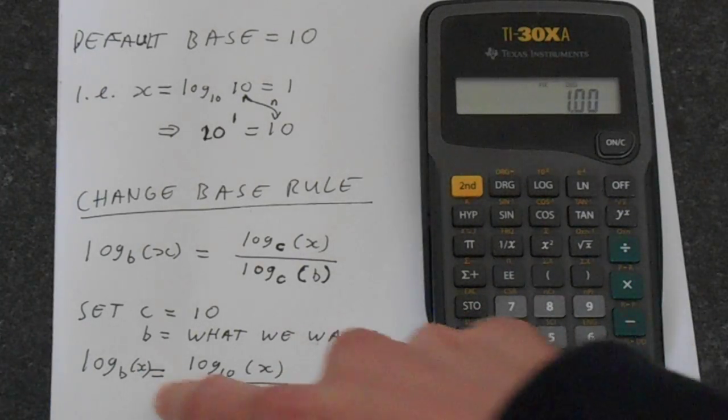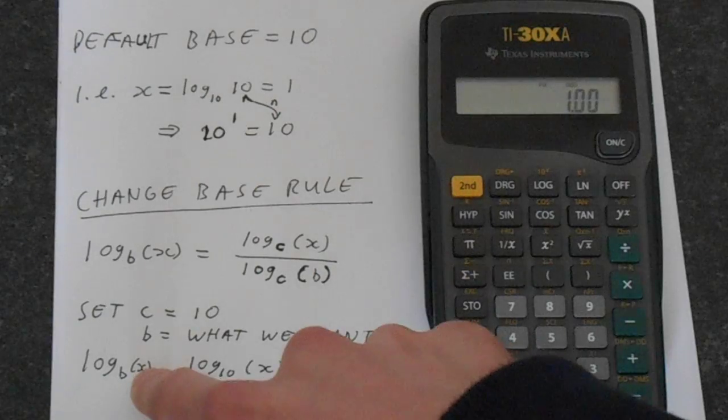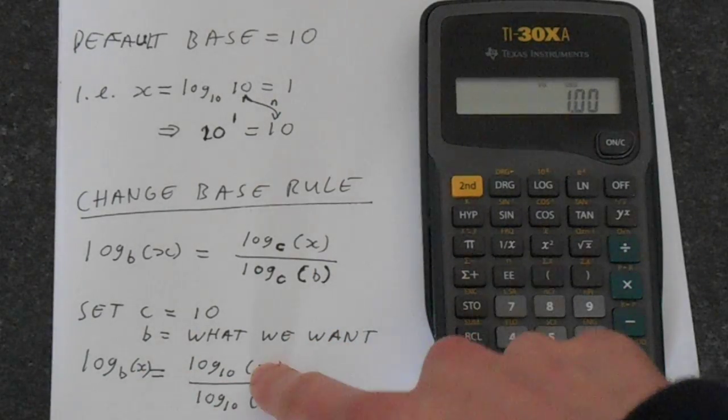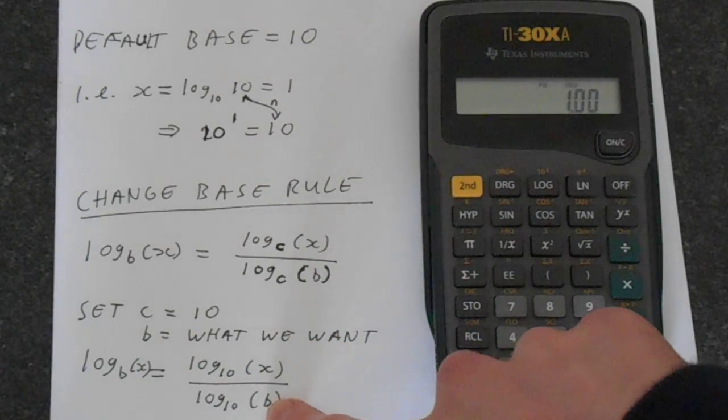And x's match up, that's what we want. So if we're looking for log 2 of 8, 8 would go in for x and 2 would go in this b here. So let's just do an example of this.